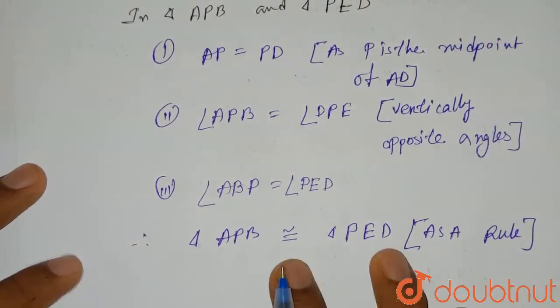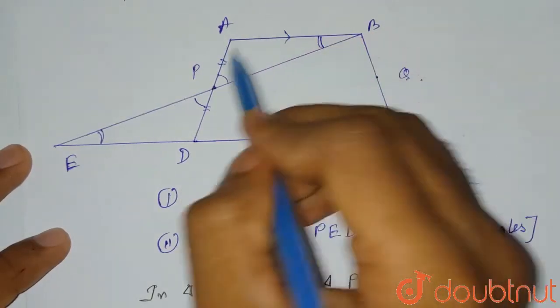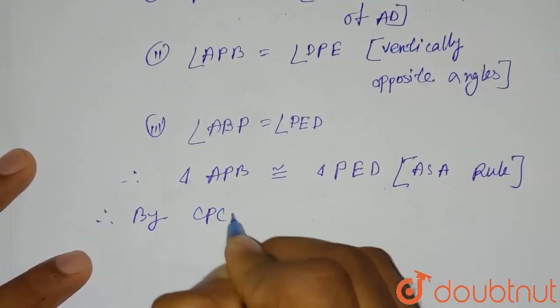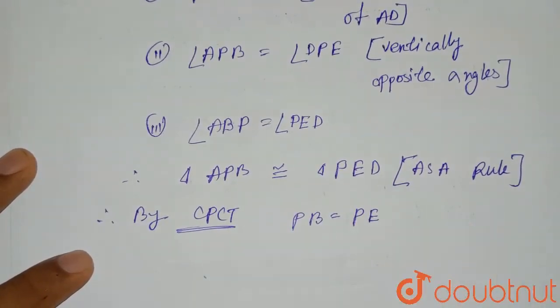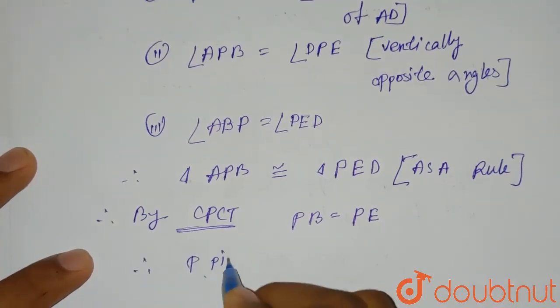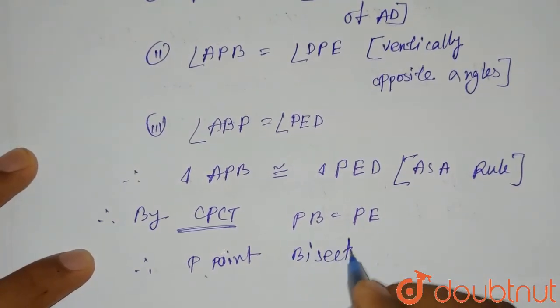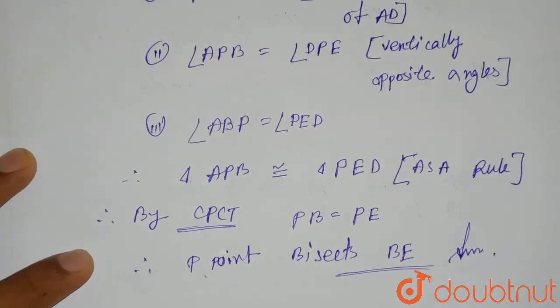So they are congruent. As these two triangles are congruent, we can say that their corresponding parts will be equal. That means by using CPCT, corresponding parts of congruent triangles, we can say that PB will be equals to PE. So we can write from here that: therefore by CPCT, PB equals PE, which implies that P is the midpoint of BE. Which means therefore P point bisects BE. This is what we had to prove. So this is the correct solution for this question. Thank you.